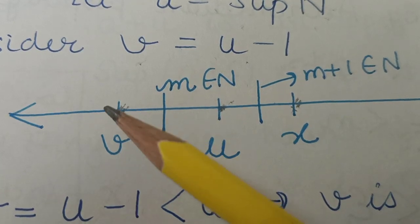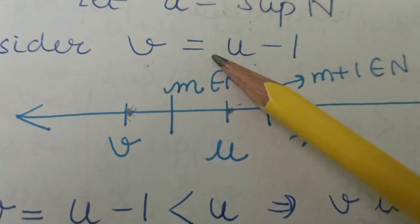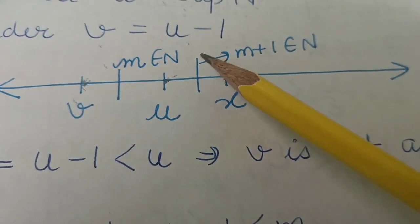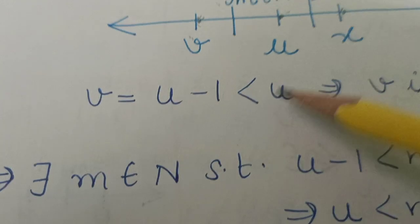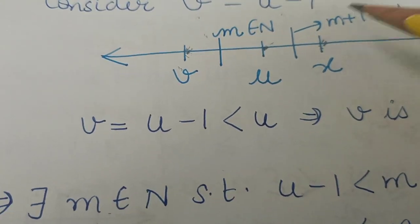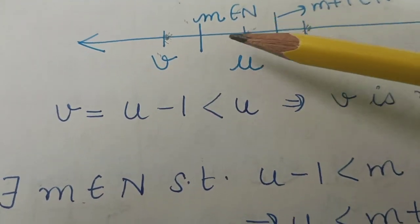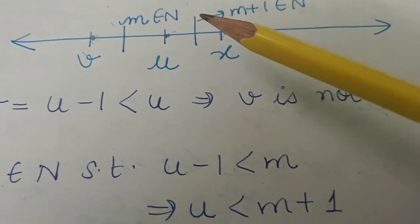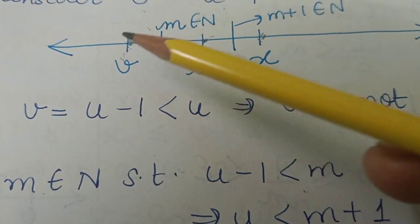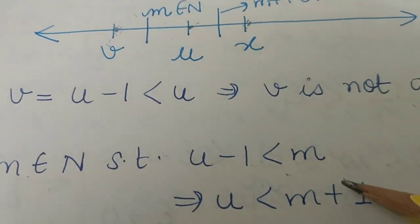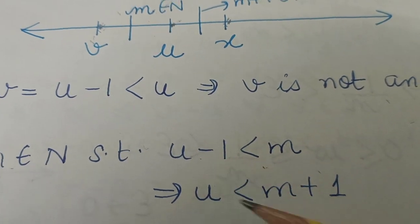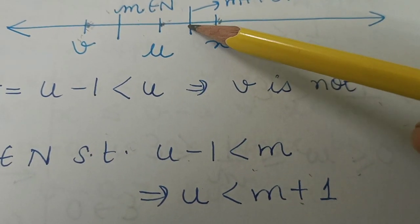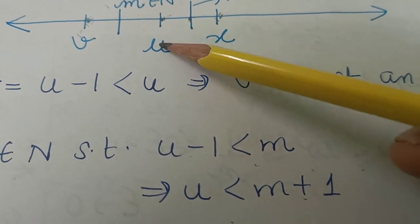Since u is the least upper bound (supremum), v = u − 1 is not an upper bound. So there must exist some natural number m such that v = u − 1 is less than m, meaning m is greater than u − 1.